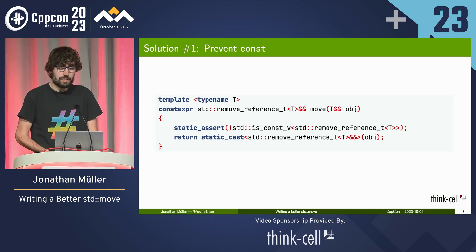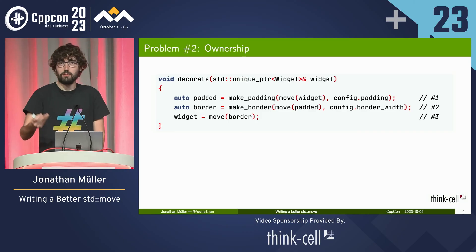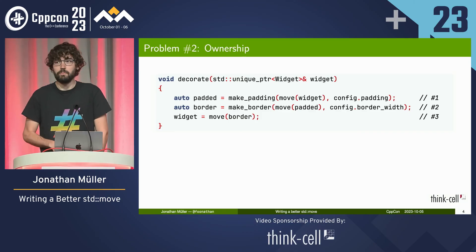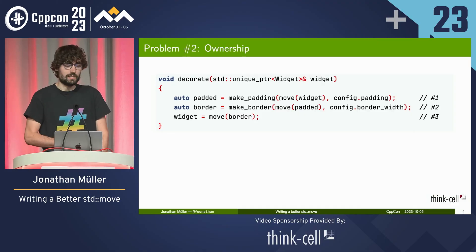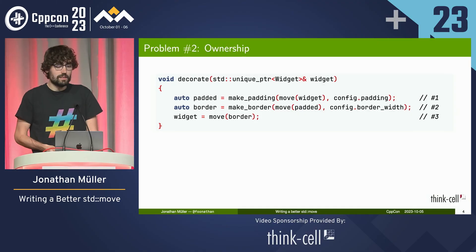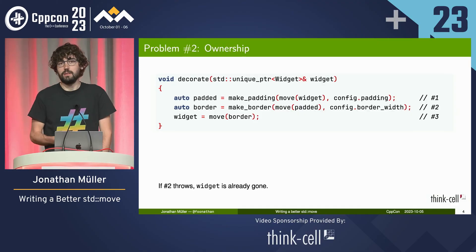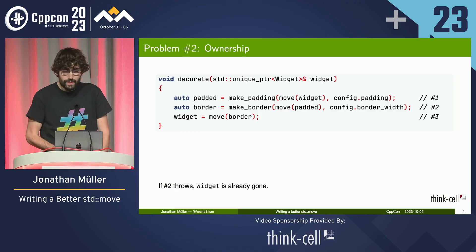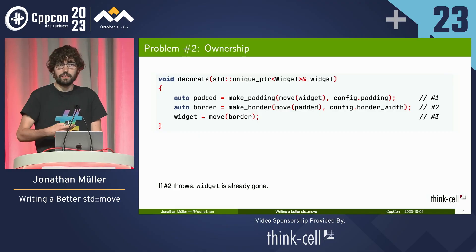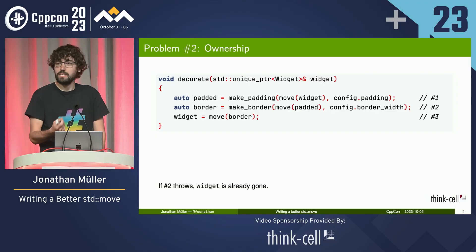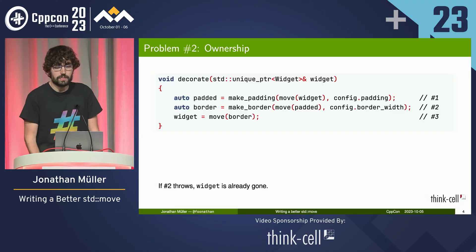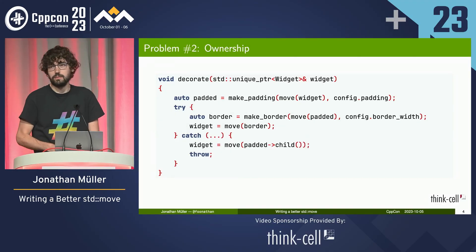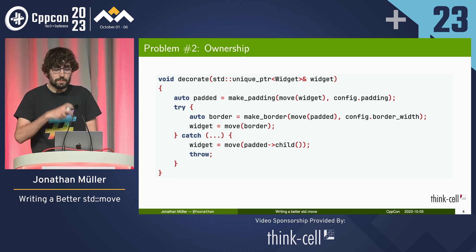The second issue is a bit more subtle. Here we've got a function that wants to decorate a widget, adding some padding and a border, and it does that by taking the widget and moving it around and then in the end replacing it. Now there's a subtle bug there. If the second line throws, then we've already moved from the widget. This is bad because the caller didn't really expect us to steal this value — it gave us a mutable reference but expected the value to come back.